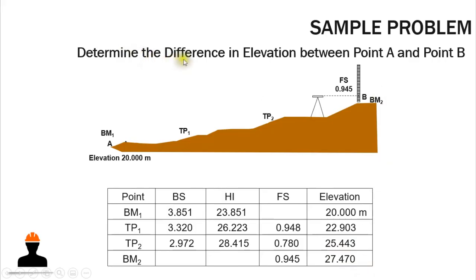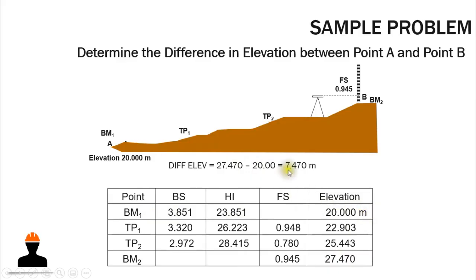Our goal is the difference in elevation between point A and point B. Subtracting the elevation of point A (20 m, our Benchmark 1) from the elevation of point B (27.470 m) gives us 7.470 meters. That is the elevation of point B relative to point A.